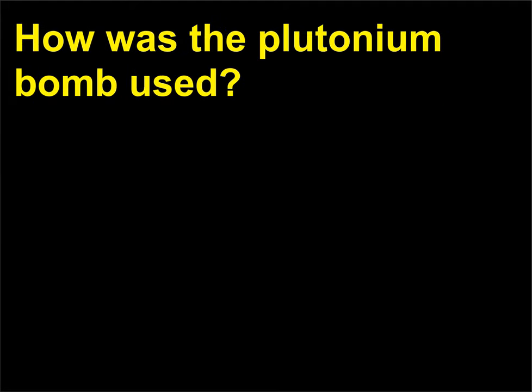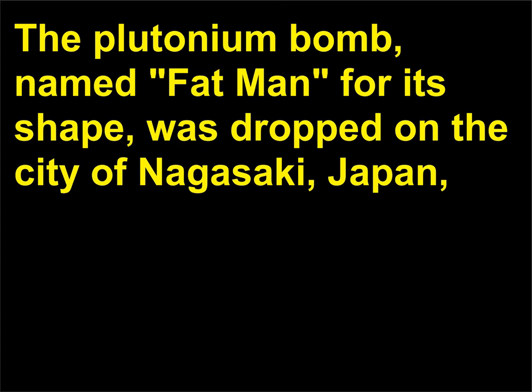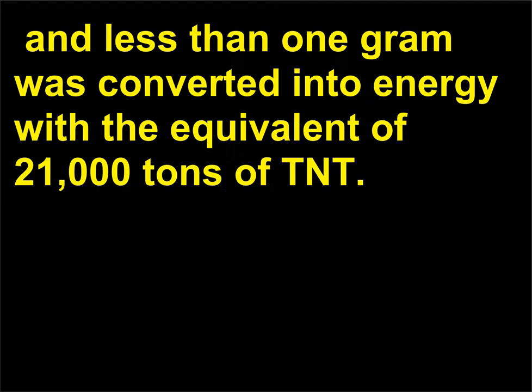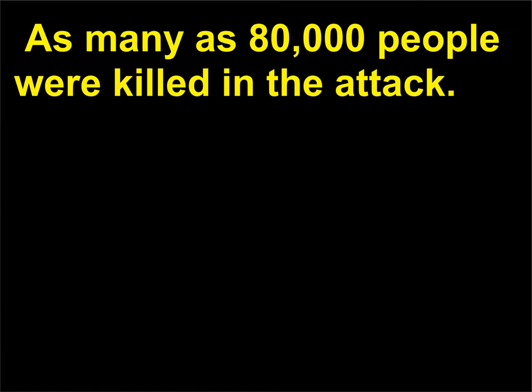How was the plutonium bomb used? Fat Man was dropped on the city of Nagasaki, Japan, on August 9, 1945. It contained 6.4 kilograms of plutonium-239. About 20% fissioned, and less than 1 gram was converted into energy with the equivalent of 21,000 tons of TNT. As many as 80,000 people were killed in the attack.